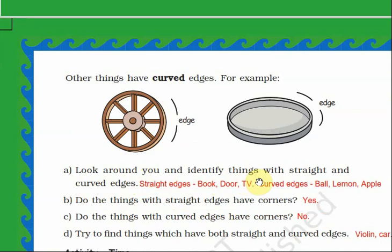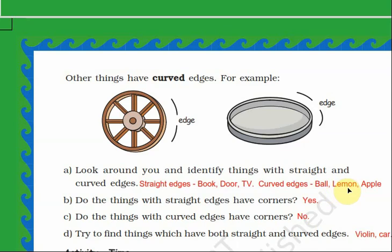Look around you and identify things with straight and curved edges. Things with straight edges include a book, a door, and a TV. Things with curved edges include a ball — which is round in shape — a lemon, and an apple. Things that are round in shape generally have curved edges.